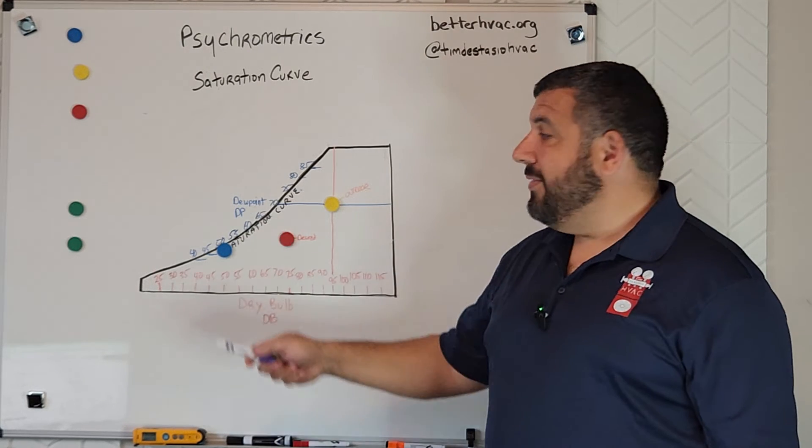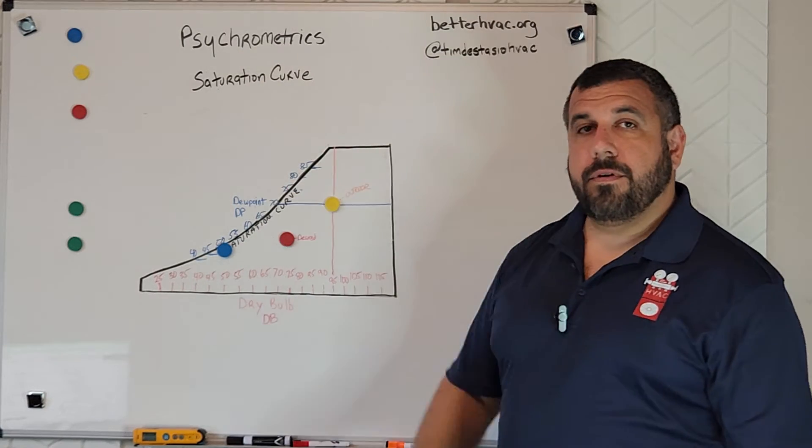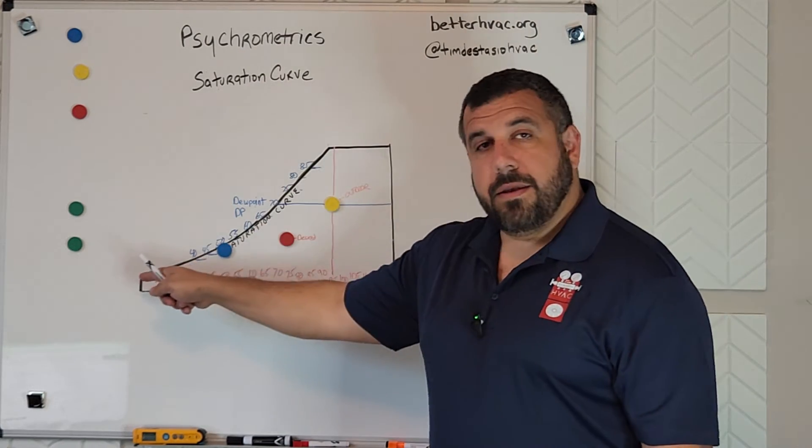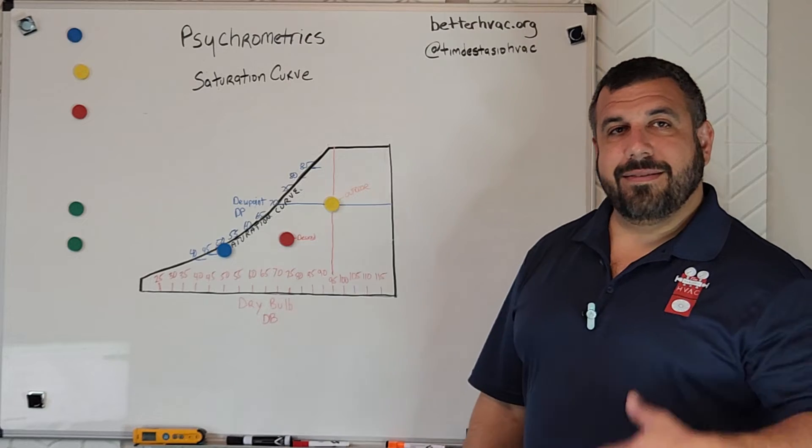we hit what we call the saturation curve. And that's just the outer limit of the psychometric chart. That's the boundary.